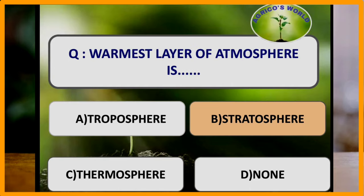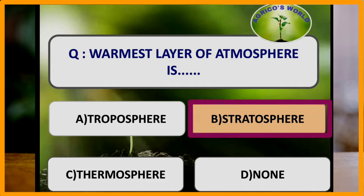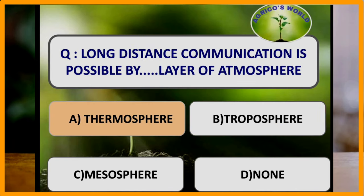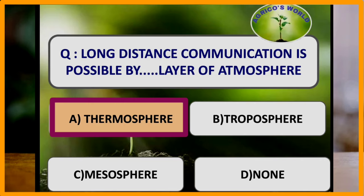The warmest layer of the atmosphere is stratosphere. It is the seat of photochemical reactions. Long distance communication is possible by which layer of atmosphere? Long distance communication is possible by the thermosphere layer of atmosphere, and it is the fourth and outermost layer of atmosphere.